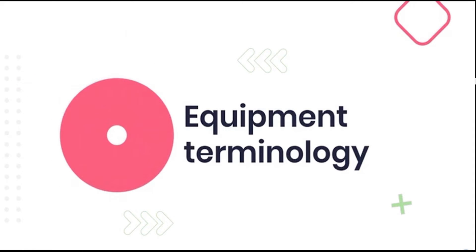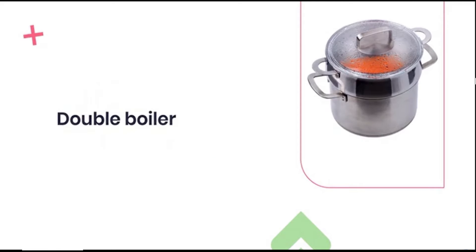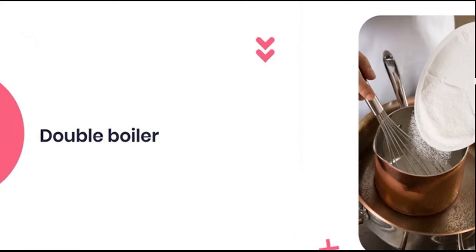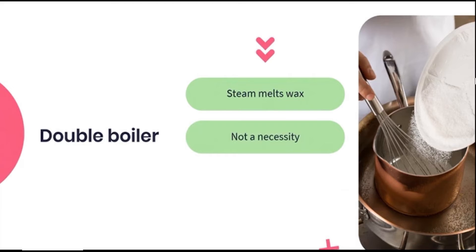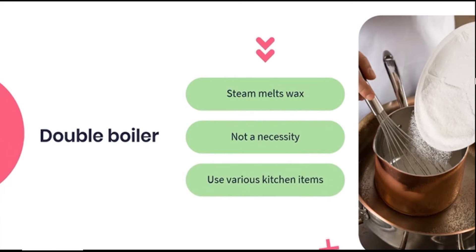Let's move on to some of the terminology we'll be using to describe our equipment. A double boiler is a vessel you will be using every time you melt the wax. These are pots that rest inside one another with a layer of water in between. The water is heated inside the outside pot, thus preventing the second pot which holds your wax from having a direct heat source applied to it. The wax in the upper pot is instead melted by the steam that rises from the lower pot. One doesn't necessarily need to invest in an actual double boiler — any two heat resistant pots or jugs could be used to create this nested effect.